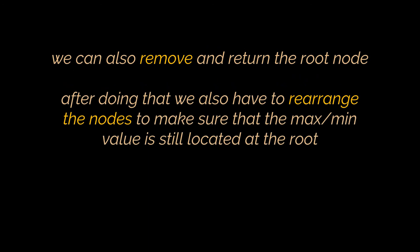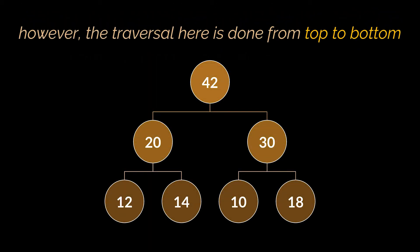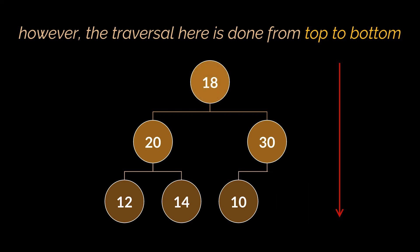The second operation is removing and returning the root, and after removing it we have to place the new highest or smallest value as the new root of the maximum or minimum heap respectively. Contrary to the insert operation, retrieving the new root after the delete operation is done by traversing the heap from top to bottom, starting at the root or index zero and continuing until we reach the last index of the heap array. Before traversing from top to bottom, the first step is to place the last element in the array at the root location, then traverse the tree from top to bottom to find the new root.